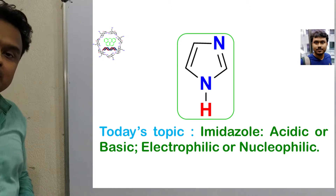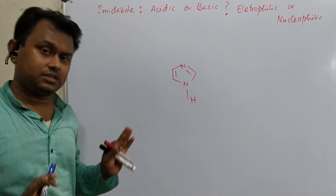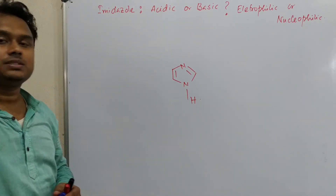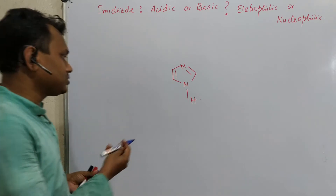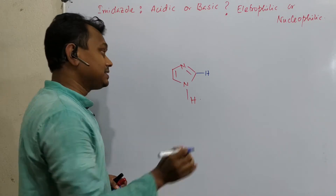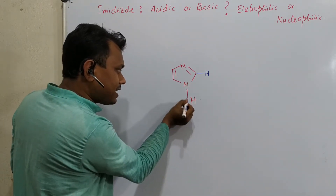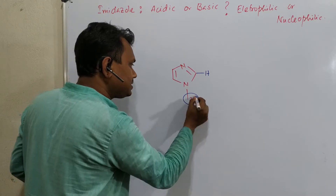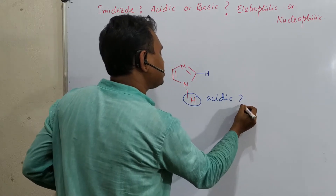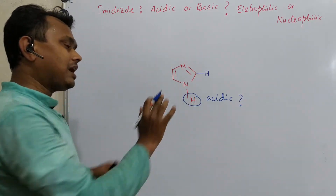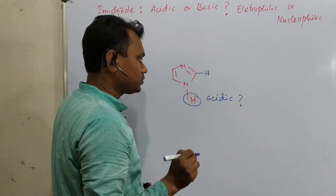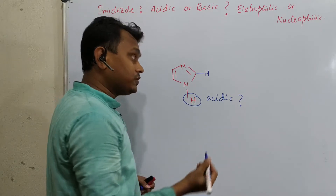Before going into details, understand that acidic generally refers to proton-based acidity, and basic means proton abstraction. Now, if you look at the structure of imidazole, it has an NH group and also a CH. We will discuss both. The key question is: is this NH bond acidic? Is it acidic? Obviously yes.